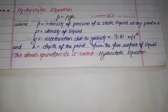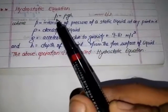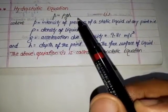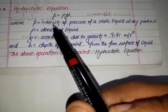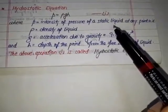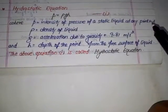In this video we will discuss hydrostatic equation p equal to rho gh, and here p is the intensity of pressure of a static liquid at any point in it.